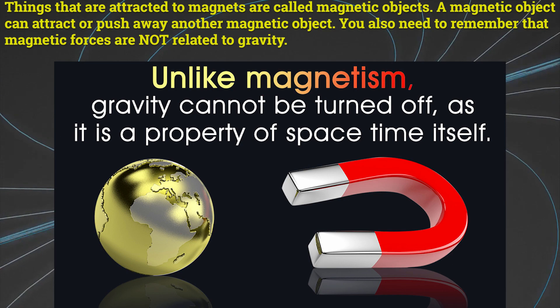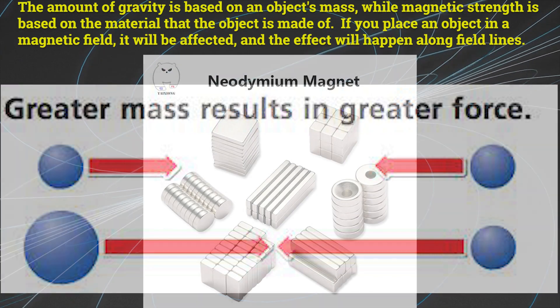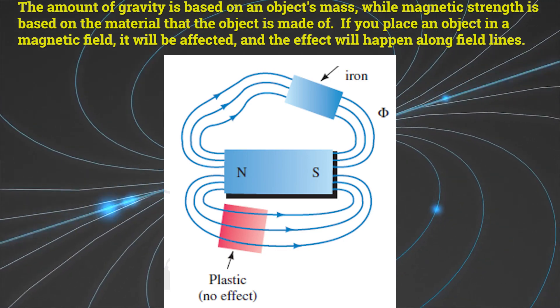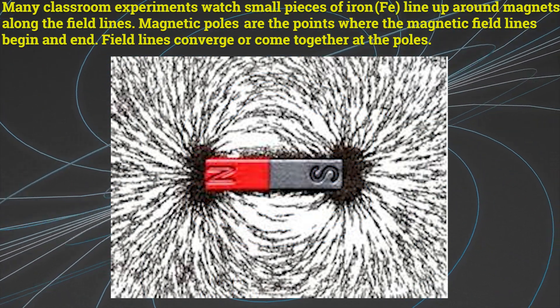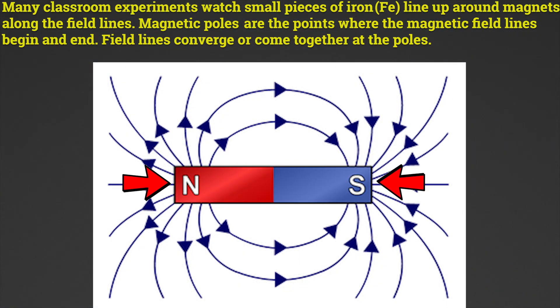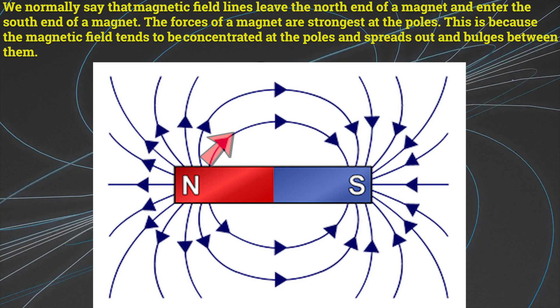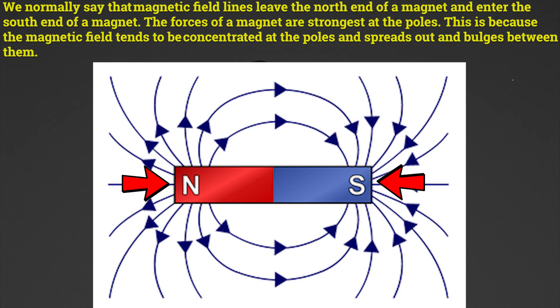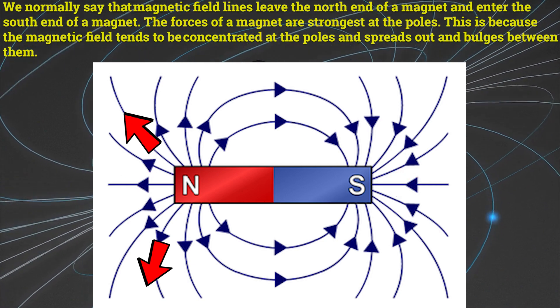You also need to remember that magnetic forces are not related to gravity. The amount of gravity is based on an object's mass, while magnetic strength is based on the material that the object is made of. If you place an object in a magnetic field, it will be affected, and the effect will happen along field lines. Many classroom experiments watch small pieces of iron line up around magnets along the field lines. Magnetic poles are the points where the magnetic field lines begin and end. Field lines converge or come together at the poles. We normally say that magnetic field lines leave the north end of a magnet and enter the south end of a magnet. The forces of a magnet are strongest at the poles. This is because the magnetic field tends to be concentrated at the poles and spreads out and bulges between them.